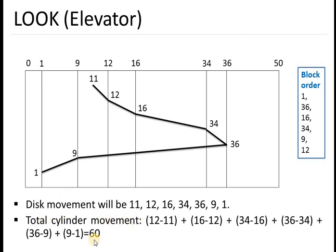The total cylinder movement is 60. To calculate: from 11 to 12 is 1, 12 to 16 is 4, 16 to 34 is 18, 34 to 36 is 2 — so going forward that is 36 minus 11 = 25. Then reversing: 36 to 9 is 27, 9 to 1 is 8. Total comes to 60. In the SCAN algorithm the total would be higher because it goes all the way to cylinder 50 before reversing.